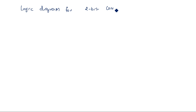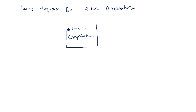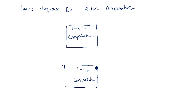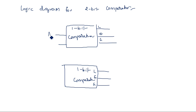With all these conditions, we are going to design the logic diagram for the two-bit comparator using two one-bit comparators. We have two one-bit comparators. Each one-bit comparator has three outputs: less than, equality, and greater than. The first comparator takes inputs a1 and b1, and the second comparator takes inputs a0 and b0.